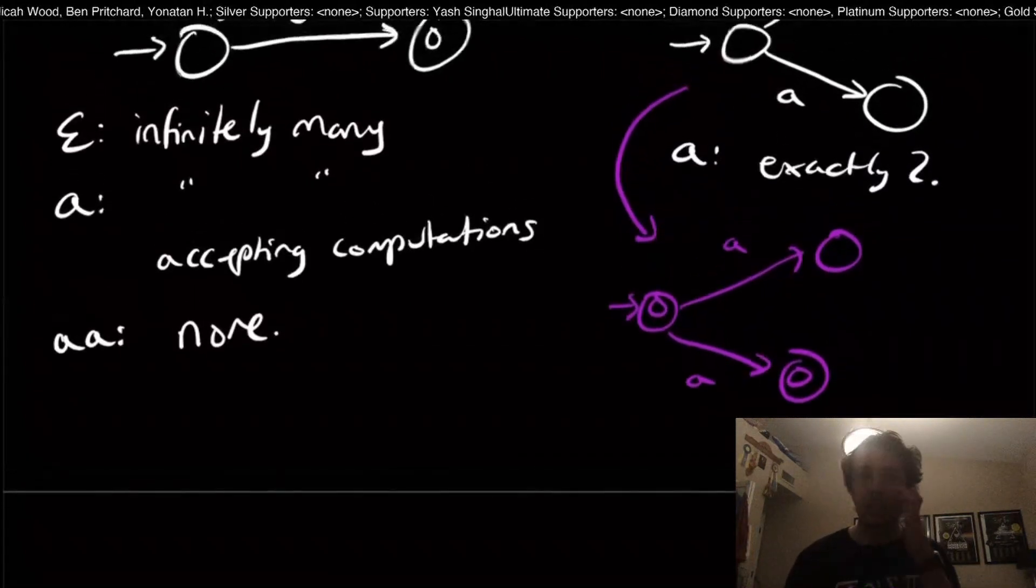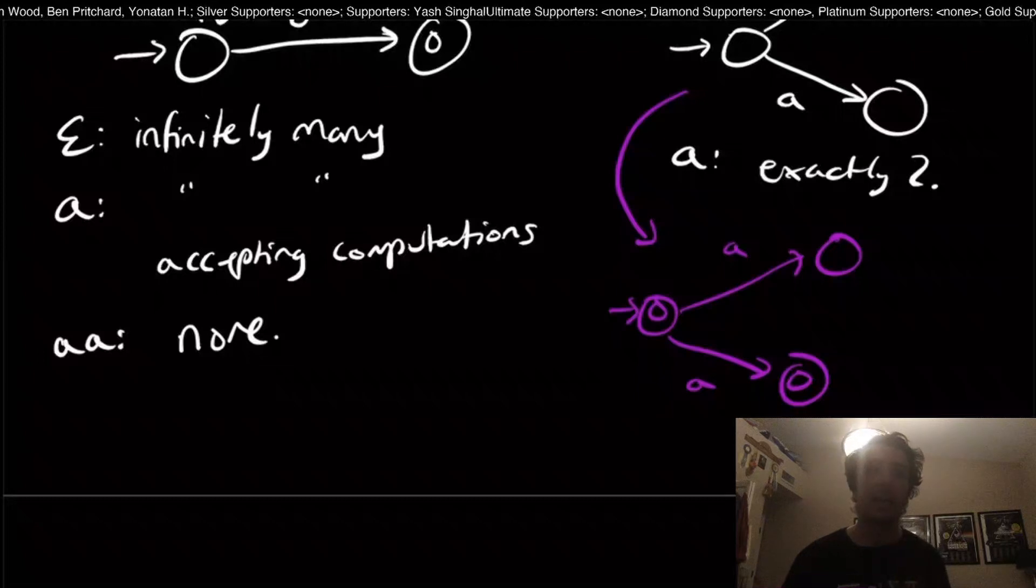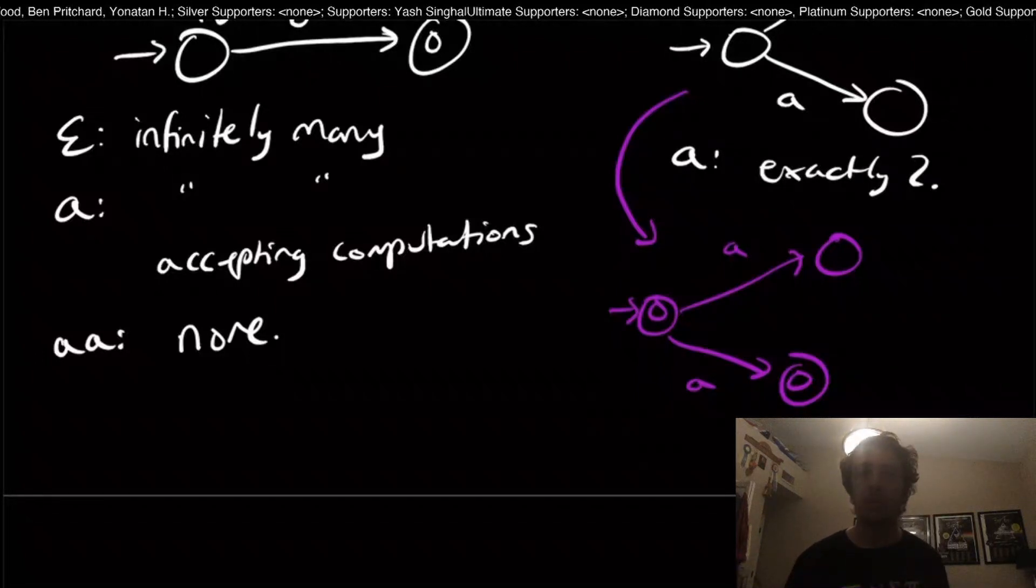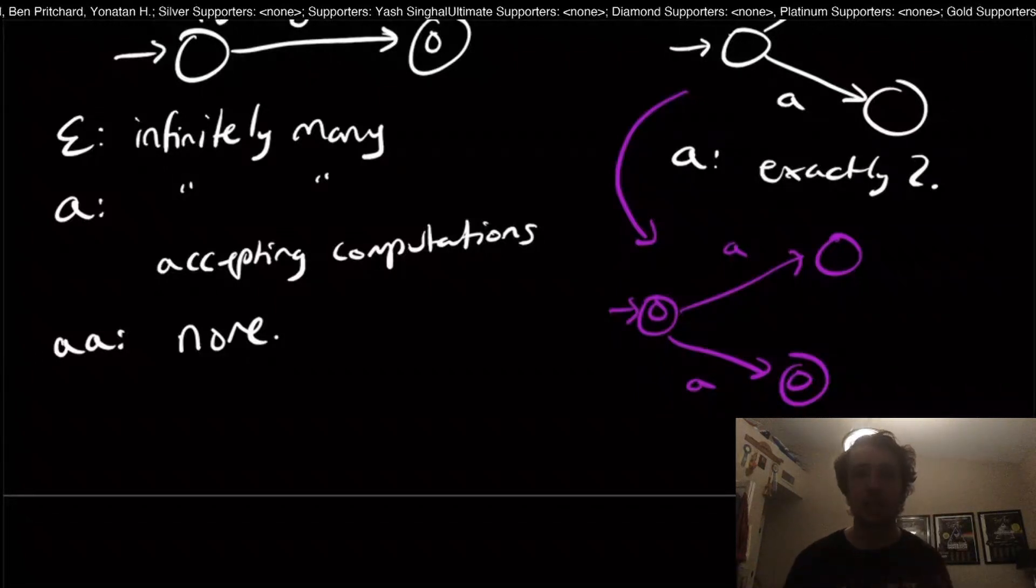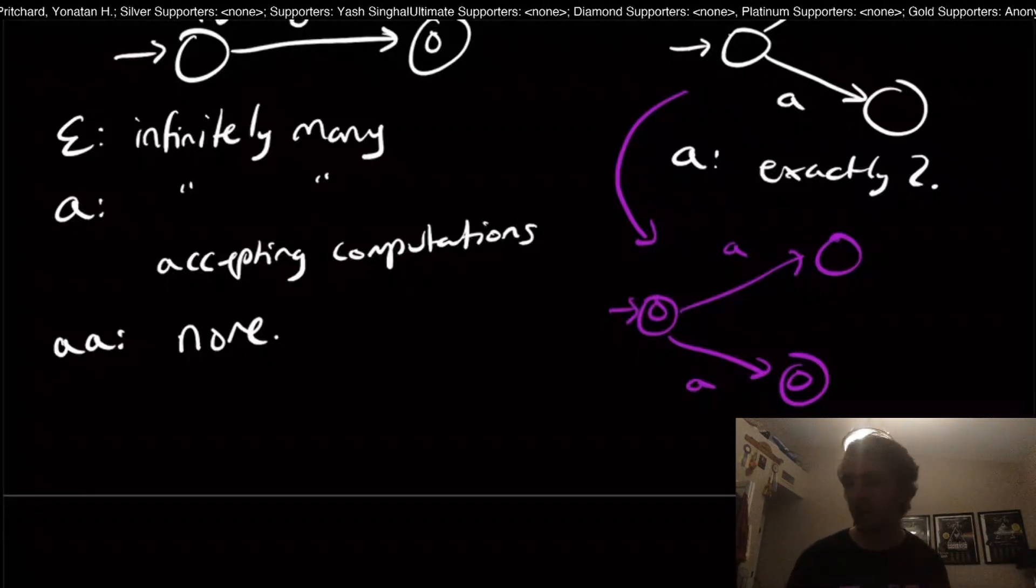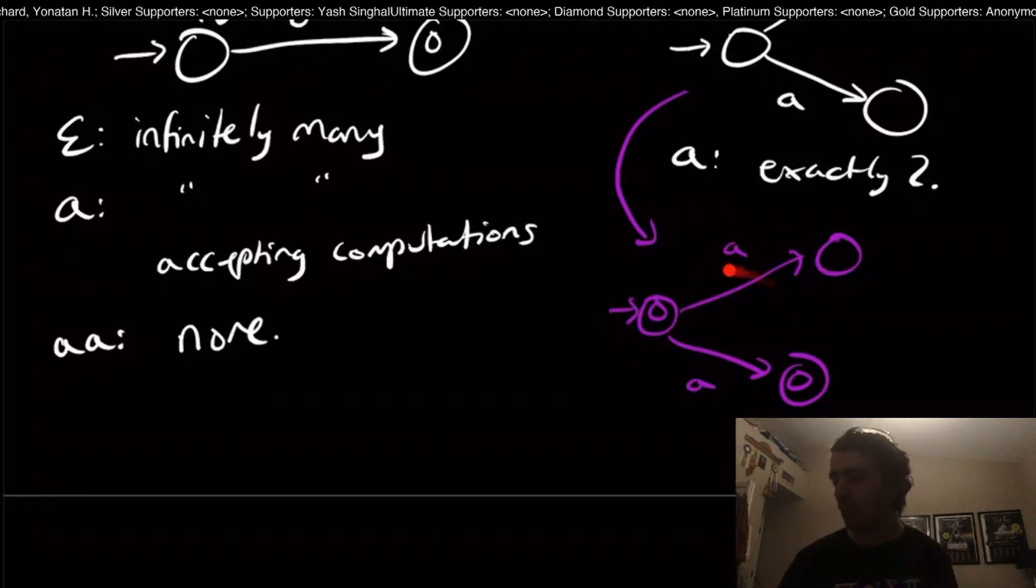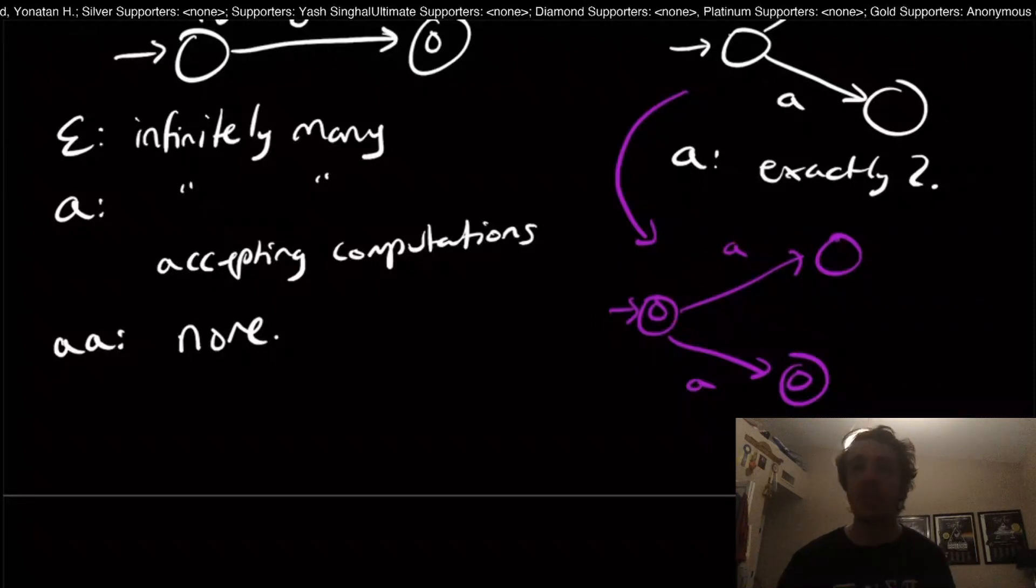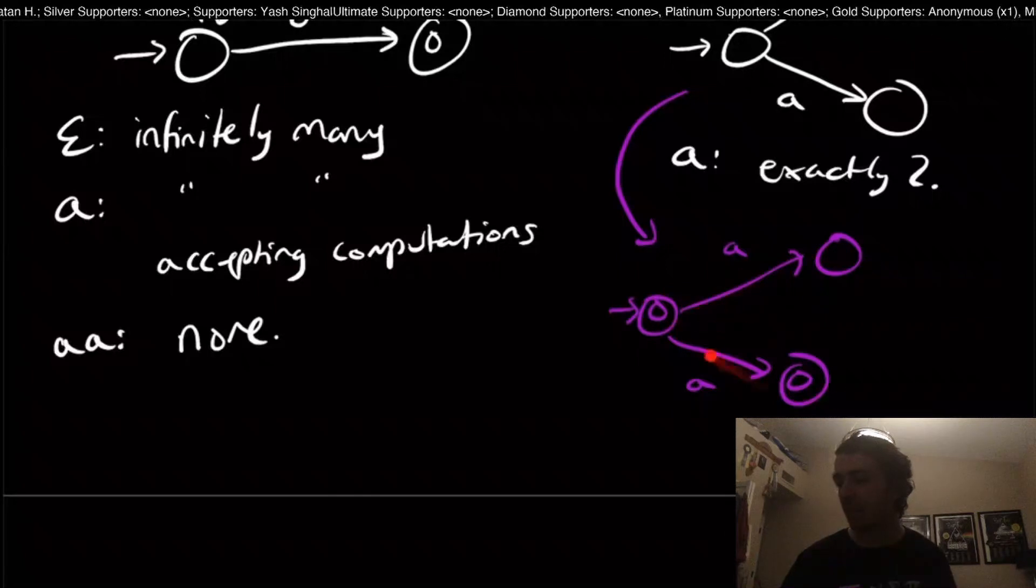This tells us something interesting that it's really important for the DFA to have exactly one computation to get the closure and the complement to work. If we allow ourselves to have multiple transitions, then that whole proof breaks down.